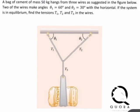Hi friends, welcome to my YouTube channel. Subscribe if it's your first time, share the videos, and leave a comment. The question we're going to solve falls under dynamics, specifically static equilibrium. A bag of cement of 50 kg hangs from three wires. Two of the wires make angles theta 1 = 60 degrees and theta 2 = 30 degrees with the horizontal. The system is in equilibrium — find the tensions T1, T2, and T3 in the wires.